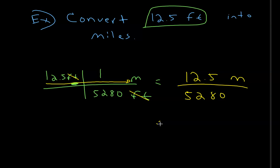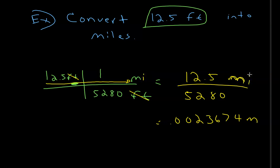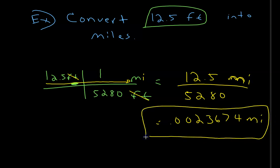Multiplying across, the feet cancel, giving 12.5 divided by 5,280, which equals approximately 0.0023674 miles. Note: MI is the abbreviation for miles, while M is usually meters. So 12.5 feet is not much compared to a mile — it's about 0.00237 miles.